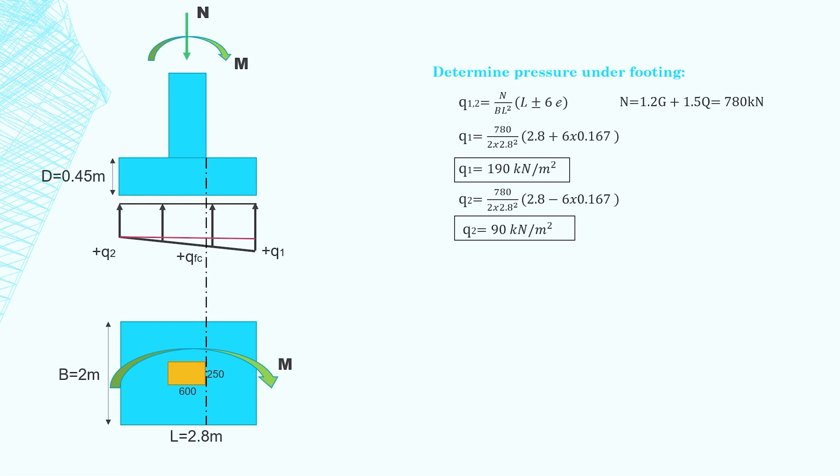In order to design the reinforcement for bending, we need to work out the pressure under the footing at the critical section for bending, which is at the column face for reinforced concrete columns. So let's find the pressure under the footing at column face. To find QFC, we use similar triangles. I've drawn a red line here, which is the height of this triangle. Plugging the numbers into the equation, we're going to find that QFC is 150 kPa. So you've got 150 kPa here.